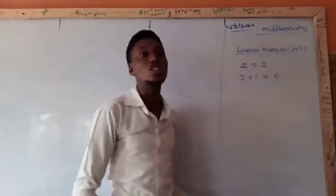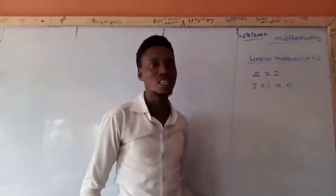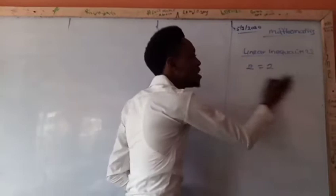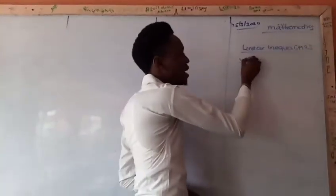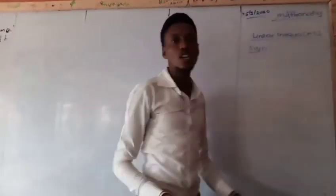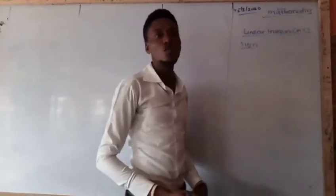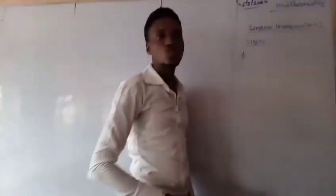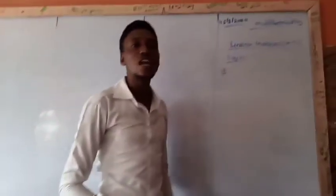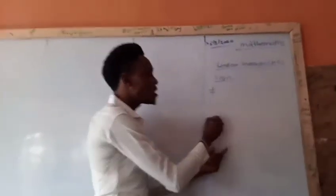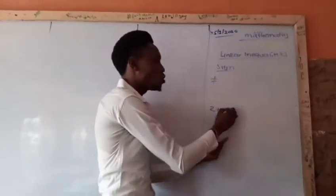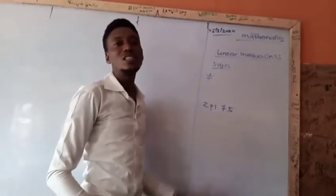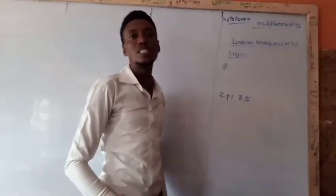A son is not equal to his parents in age — these are statements of inequality. We have different signs that we normally use for inequality. One sign is 'not equal to.' For example, 2 plus 1 is not equal to 5. This is an inequality sign.